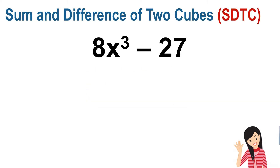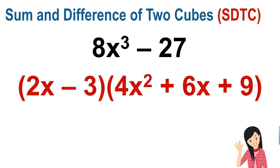For sum and difference of two cubes, each term must be a perfect cube. The binomial comes from the cube root of each term: cube root of 8x³ is 2x, and cube root of 27 is 3. Copy the sign of the given polynomial, so the binomial is (2x − 3). For the trinomial: square the first term (2x² = 4x²), square the last term (3² = 9), and multiply the two binomial terms (2x × 3 = 6x) for the middle term.